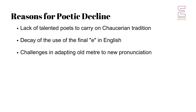Reasons for Poetic Decline. Several reasons have been proposed to explain this rapid decline in poetic quality. The most obvious explanation is the sheer lack of talent — there was no poet of sufficient caliber to carry on the Chaucerian tradition. Additionally, the rapid decay of the use of the final E in English played a significant role. In Chaucer's meter, the final E was crucial, and the changing pronunciation of English posed a challenge to the new generation of poets, who lacked the skill to adapt the old meter to suit the new linguistic landscape.